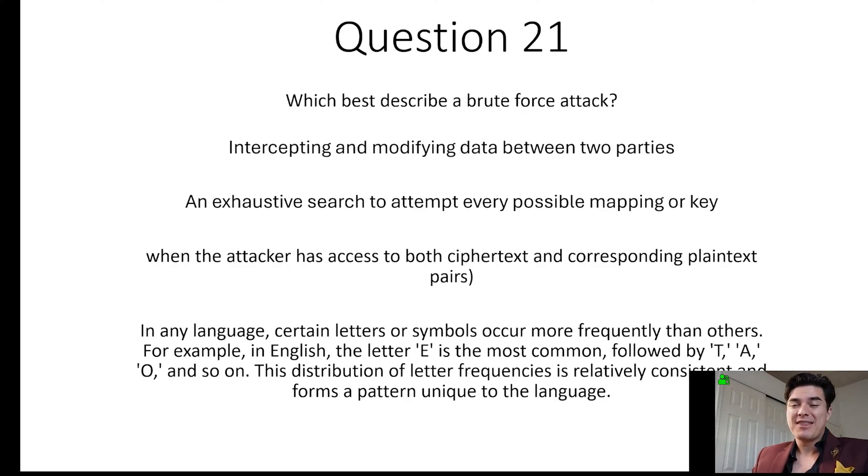And the last option here, that is known as frequency analysis. In any language, there's going to be certain letters or symbols that occur more frequently. For example, in English, there's E, or the vowels A-E-I-O-U, followed by T and A and O, and so on. And this distribution of letter frequency is relatively consistent, no matter the language, and it makes it easier for them to break an encryption.